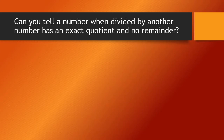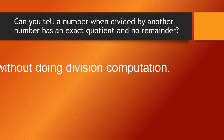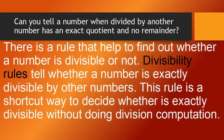Can you tell a number when divided by another number has an exact quotient and no remainder? There is a rule that helps to find out whether a number is divisible or not. Divisibility rules tell whether a number is exactly divisible by other numbers. This rule is a shortcut way to decide whether it is exactly divisible without doing division computation.